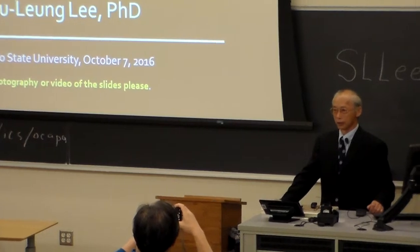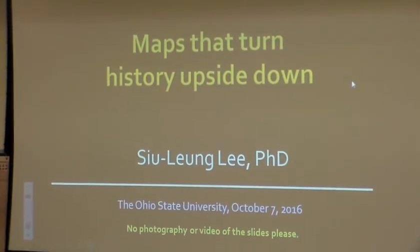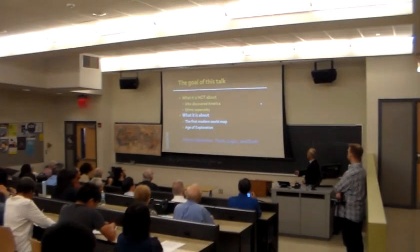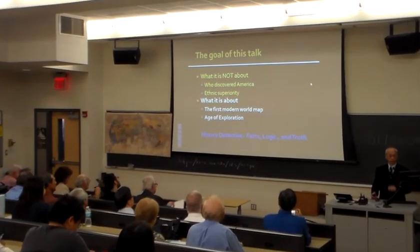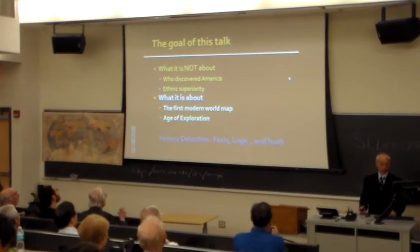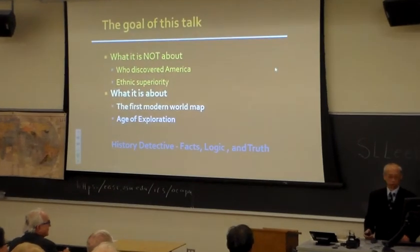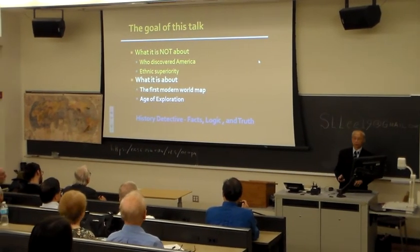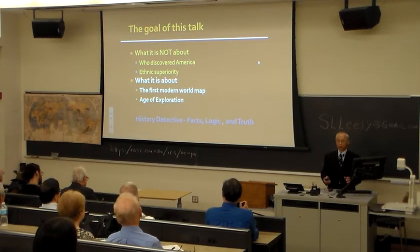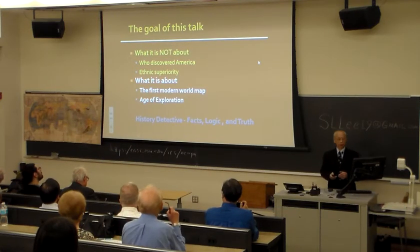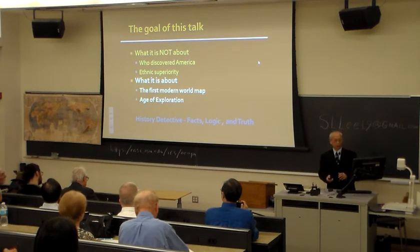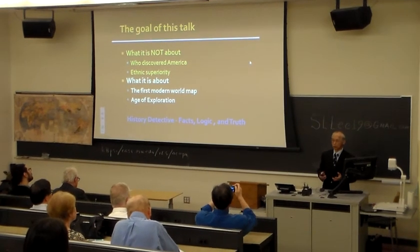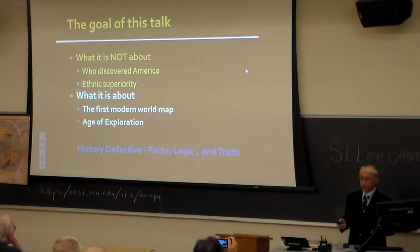The title itself is going to be shocking already: Maps that turn history upside down — maybe east to west upside down. This is not about who discovered America, and it is not about ethnic superiority of the Chinese or Europeans. What it is about is the first modern world map, how it's drawn, and how it affects the age of exploration. This is entirely a history detective story, based on facts, logic, and truth. Truth cannot be without facts, and facts cannot defy logic.